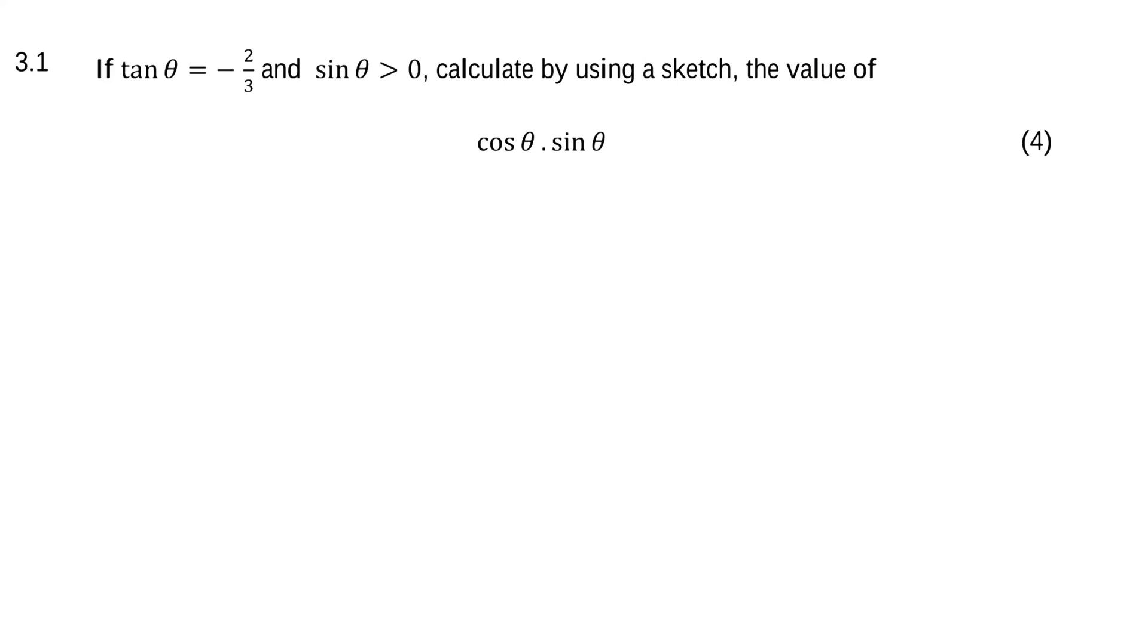If tan equals negative two over three and sin θ is positive, you need to know that this is on the CAST diagram and involves a triangle. Where would the triangle be? Don't worry, it's very easy. I'll show you.